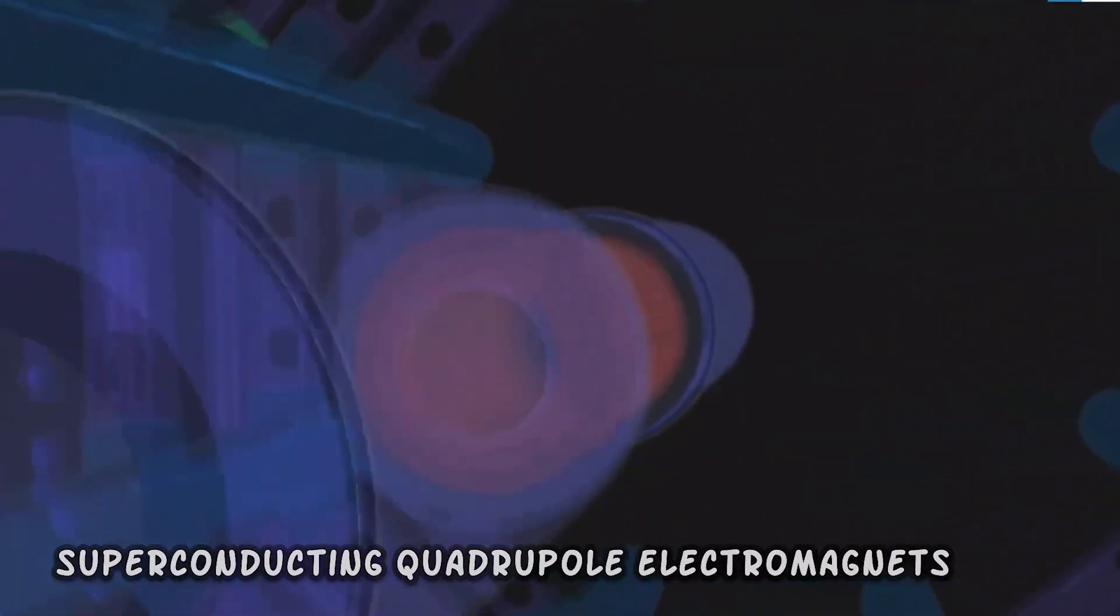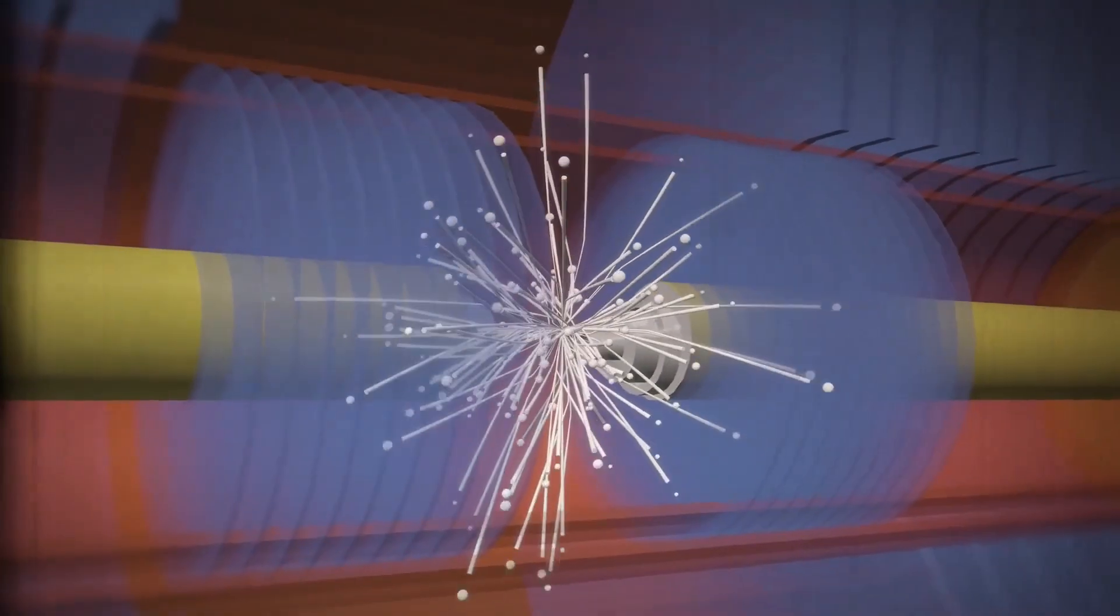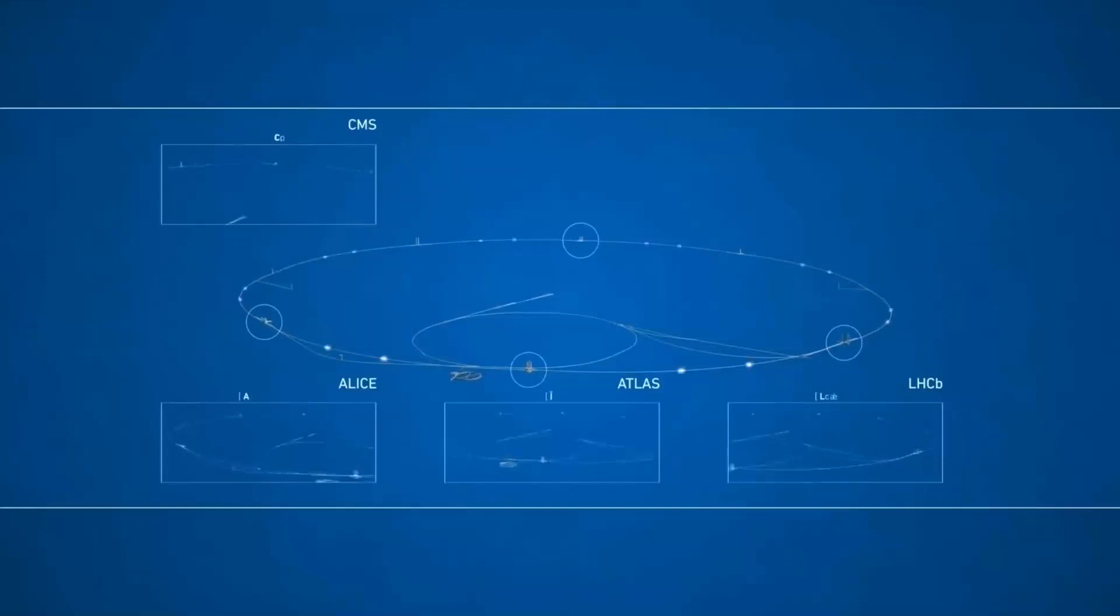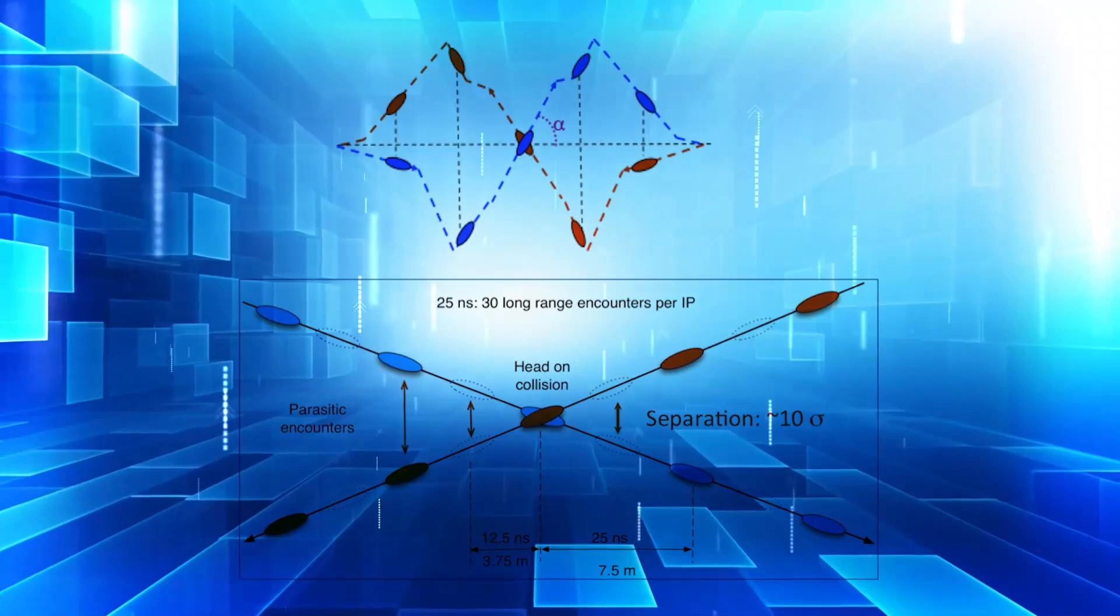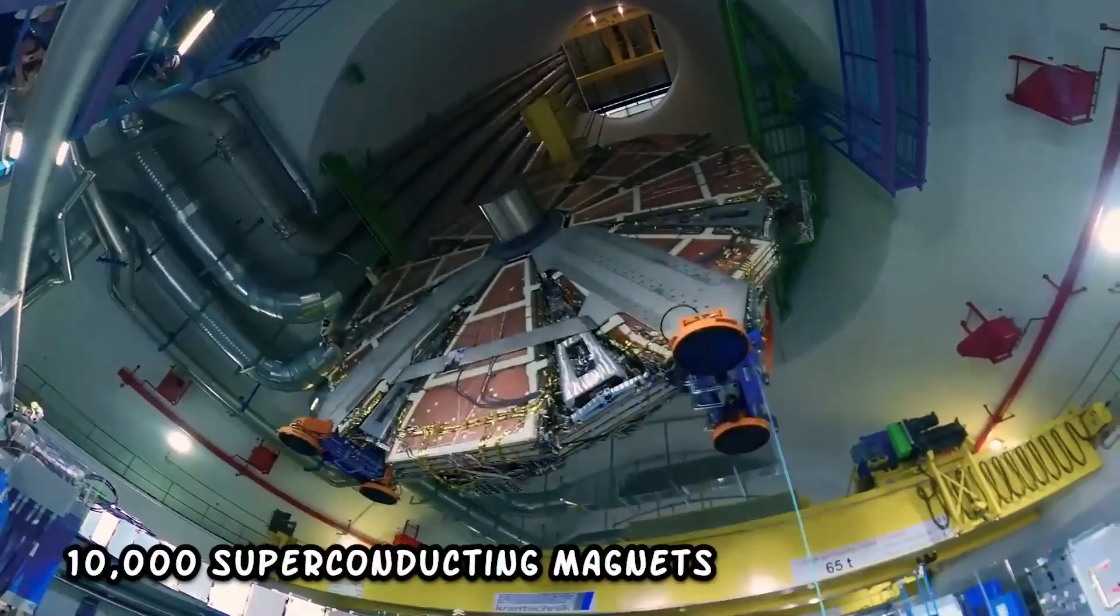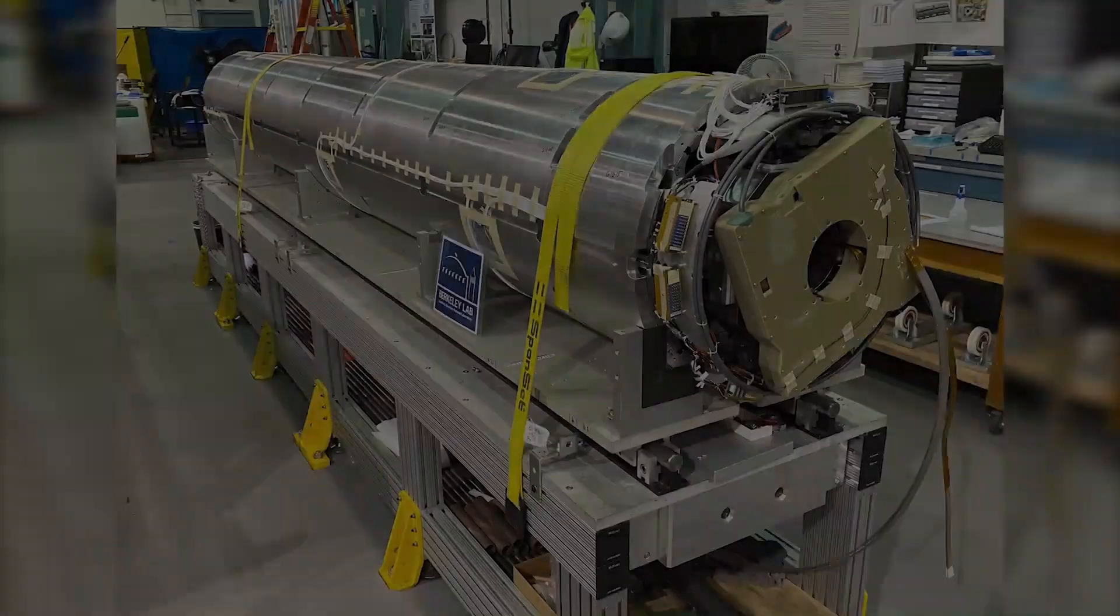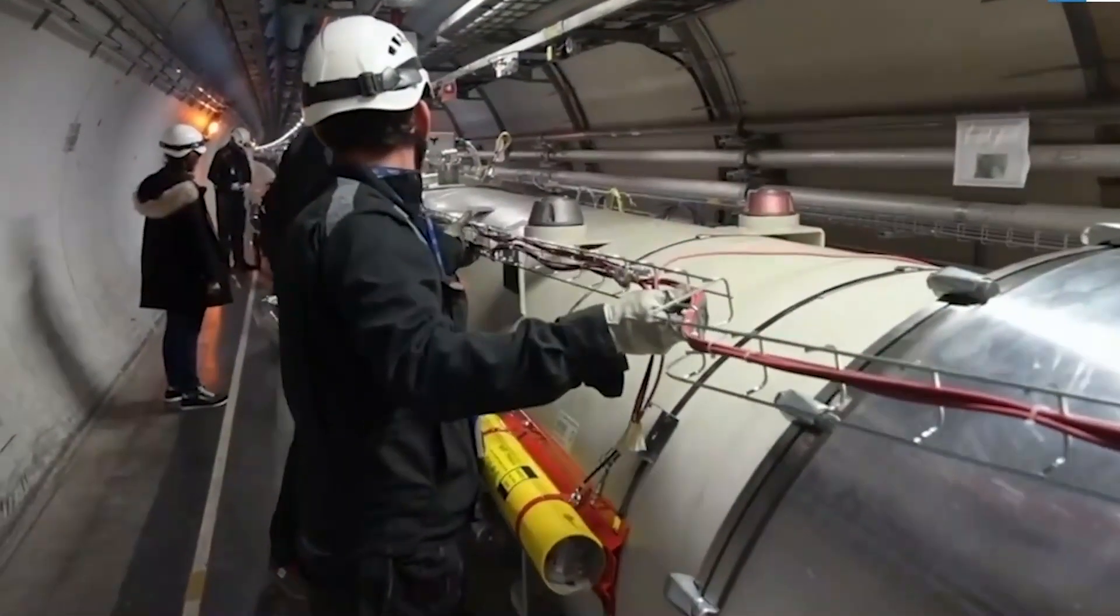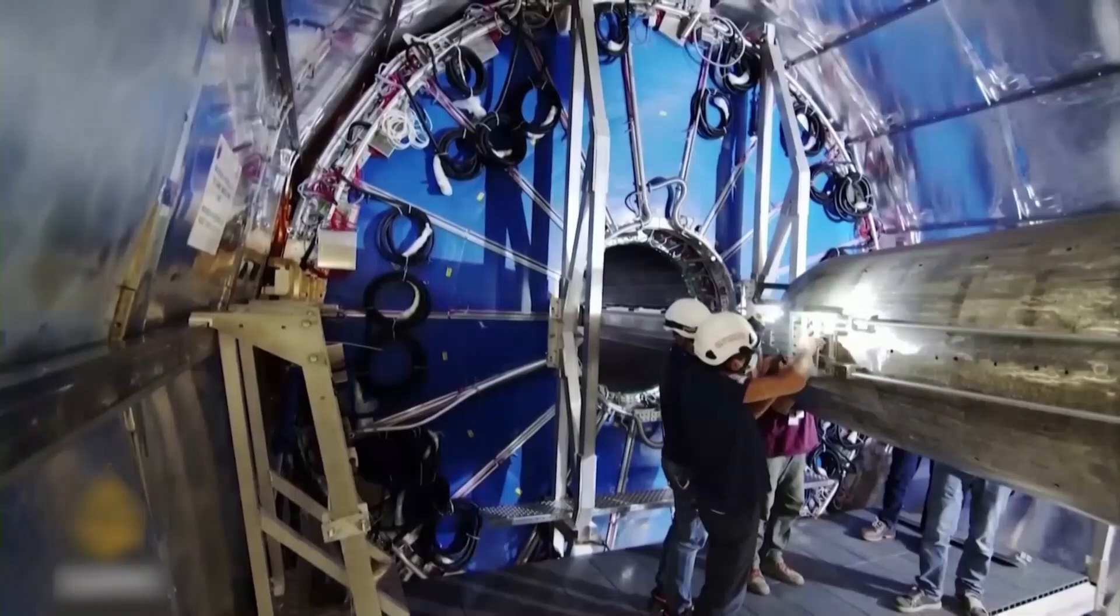Superconducting quadrupole electromagnets are used to direct the beams to four intersection points, where interactions between accelerated protons take place. The collider tunnel contains two parallel beamlines, each with a beam traveling in opposite directions around the ring. The beams intersect at four points, where particle collisions occur. The LHC uses about 10,000 superconducting magnets, with dipole magnets weighing over 27 tons. The magnets are made of copper-clad niobium-titanium, and require 96 tons of superfluid helium-4 to maintain their operating temperature of -271.25 degrees Celsius.